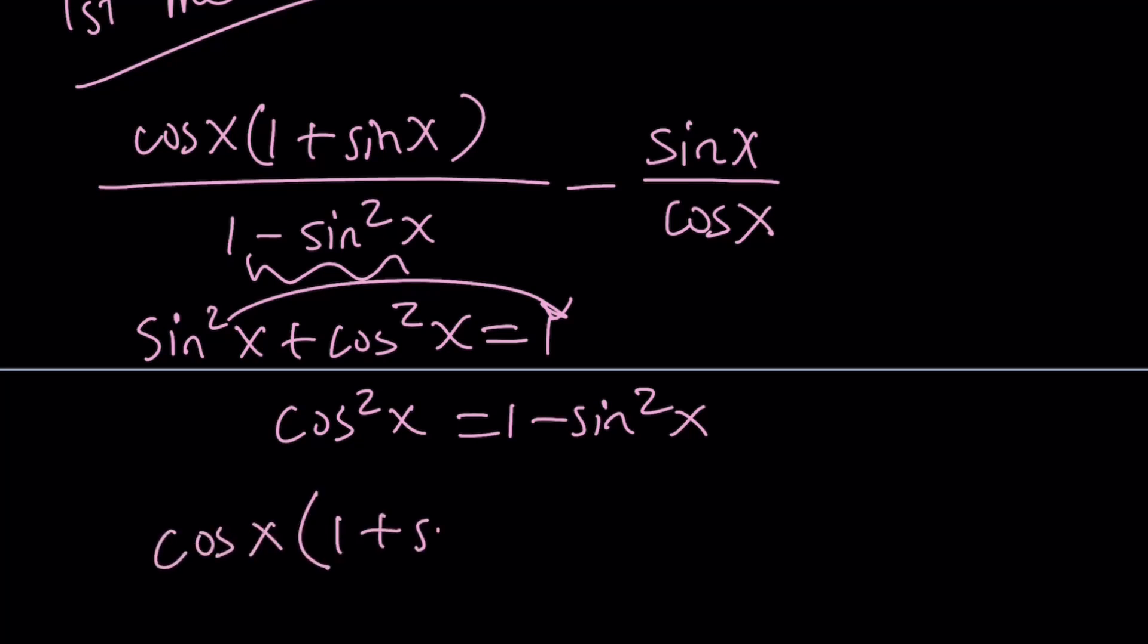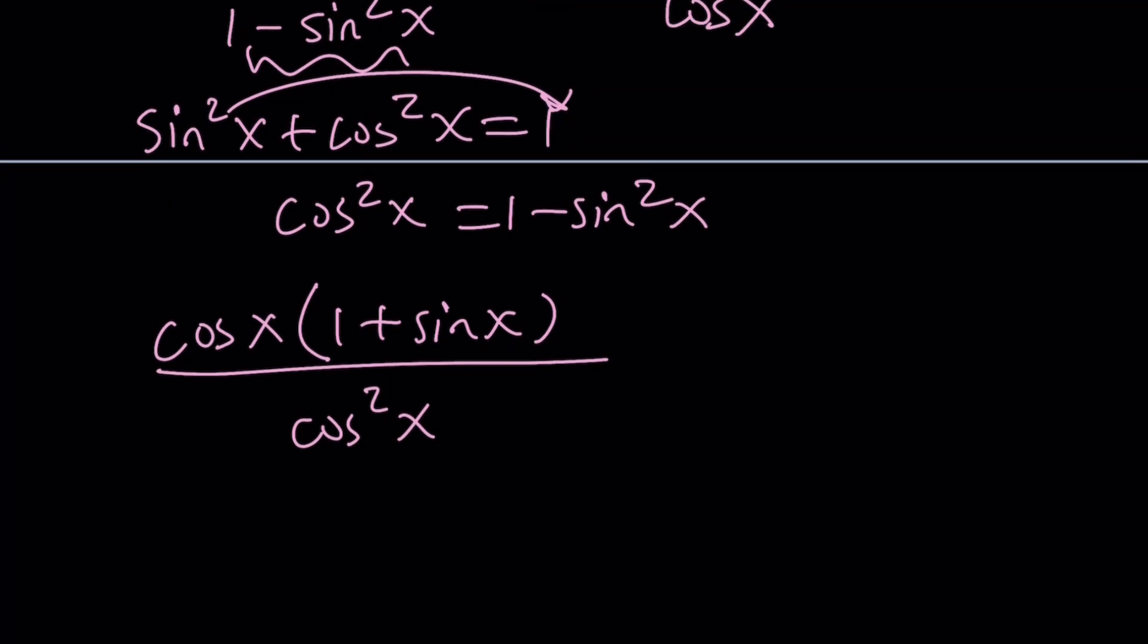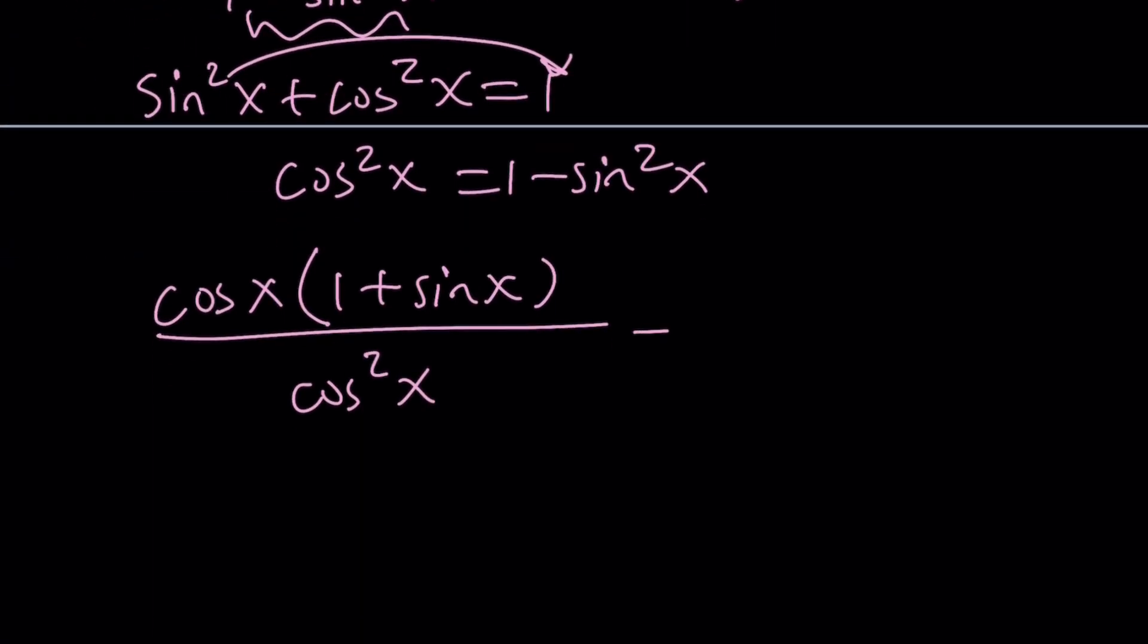Let's do it. Cosine x times 1 plus sine x divided by cosine squared, which replaces 1 minus sine squared, and then minus sine x over cosine x.